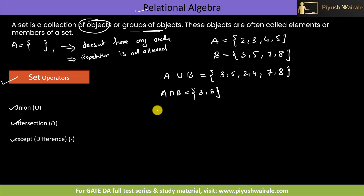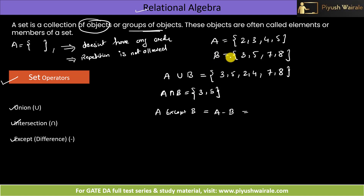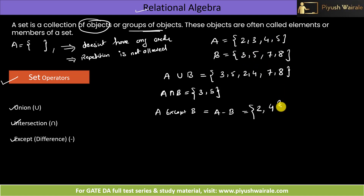What is except or difference? A except B is equivalent to A minus B. A minus B is the elements of A which are not present in B. So: 2 is not in B — add it. 3 is in B — remove it. 4 is not in B — add it. 5 is in B — remove it. So only 2 and 4 will be the answer. That is A except B.